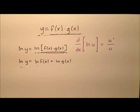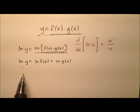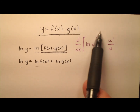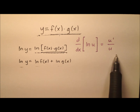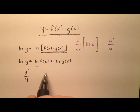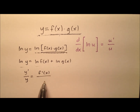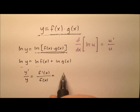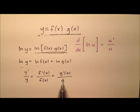So we have three distinct natural logs here. At this point, let's go ahead and differentiate both sides of the equation, going back and using that derivative rule. So we'll have y prime over y equals f prime of x over f of x plus g prime of x over g of x.